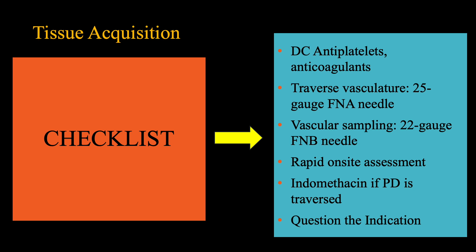In patients with an intervening normal pancreatic duct, one should also consider intra-procedural administration of rectal indomethacin as prophylaxis for pancreatitis. Finally, it is important to ensure that the information obtained impacts patient management.